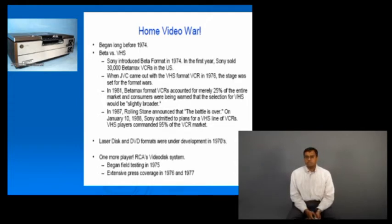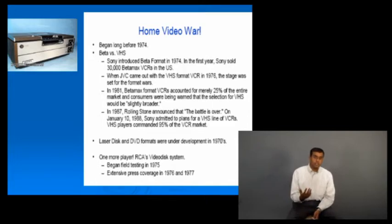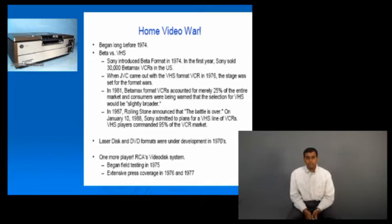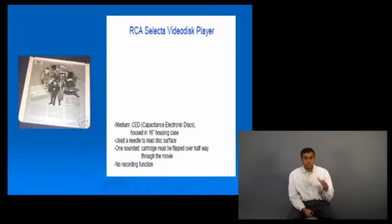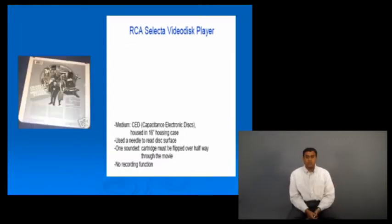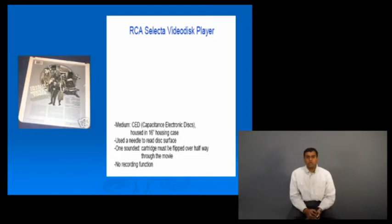In 1976 and 1977, RCA's video disc got extensive press coverage as a format that might make inroads into what was now a duopoly. The RCA video disc player was housed in about a 16-inch housing. It used a needle to read through the disc surface.